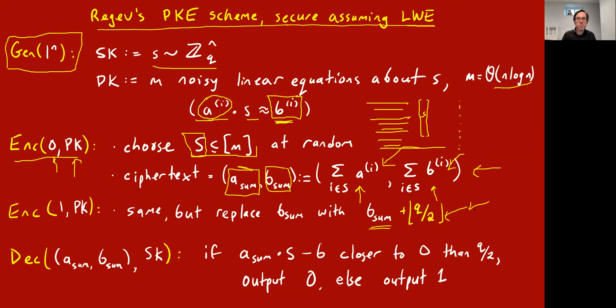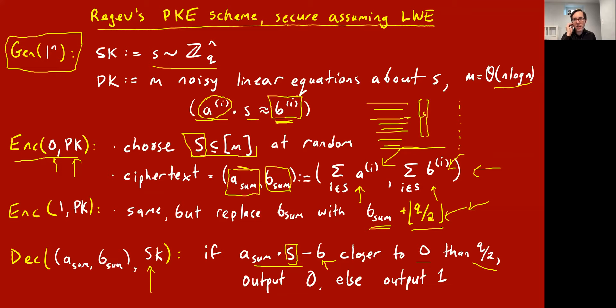Bob, who knows the secret key s, can with high probability decrypt. He takes s, which he knows, and computes b_sum minus a_sum · s. He's like: if it came out really close to zero, she was trying to encrypt zero; if it came out pretty close to q/2, she was trying to encrypt one — whichever is closest, he'll guess based on that. It won't be exactly equal because the published public key had some noise in the right-hand sides.